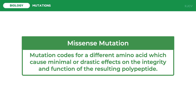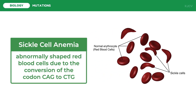A disorder caused by a missense mutation is sickle cell anemia — a disorder in which there aren't enough healthy red blood cells to carry oxygen throughout the body because the red blood cells are shaped like sickles or a crescent moon. The genetic basis of sickle cell disease can be traced to the mutation of a single nucleotide pair in the gene encoding the beta-globin polypeptide of hemoglobin: the CAG sequence is converted to CTG. This single nucleotide change leads to production of an abnormal protein, substituting glutamic acid with valine. Two copies of this mutant allele must be present to manifest the symptoms of sickle cell disease.